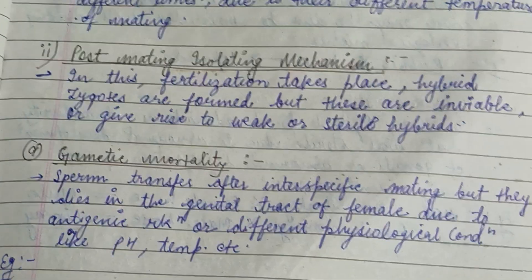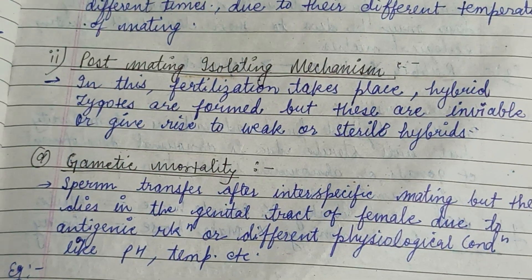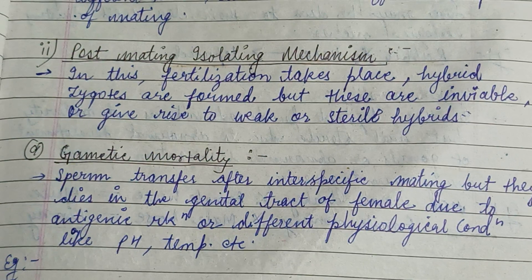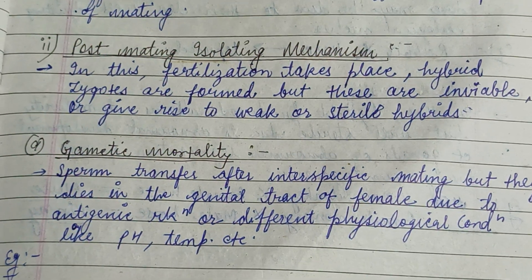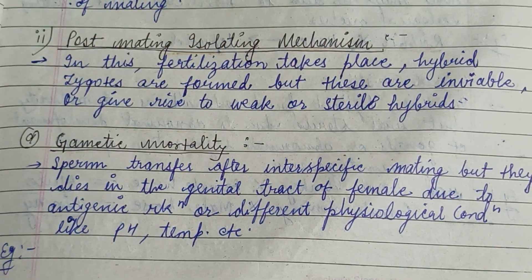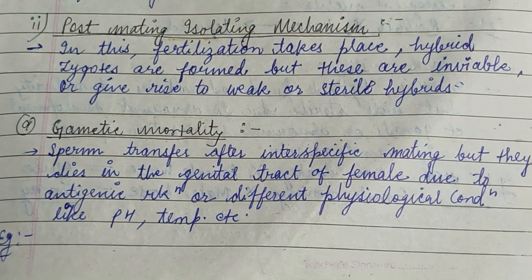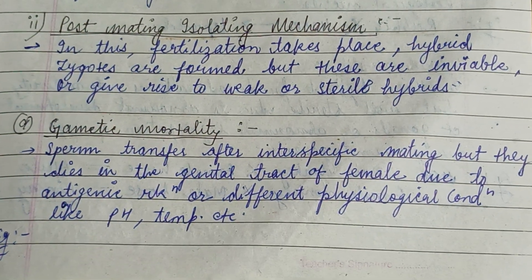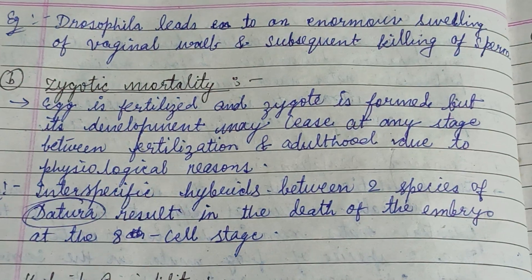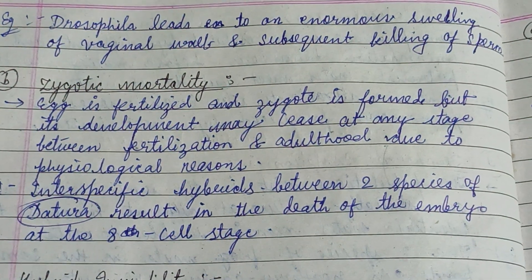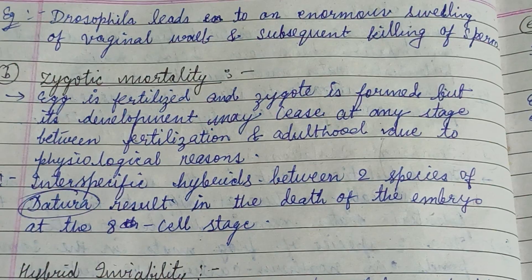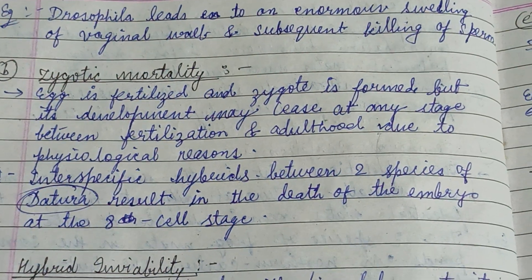Post-mating isolation includes cases where fertilization takes place but the hybrids or zygotes formed are inviable or give rise to weak or sterile hybrids. Gametic mortality is when gametes are not formed in the genital tracts of a female due to antigenic reaction or different physiological conditions. In Drosophila, this leads to enormous swelling of the vaginal wall and subsequent killing of the sperm.